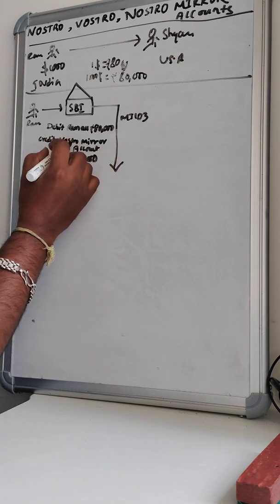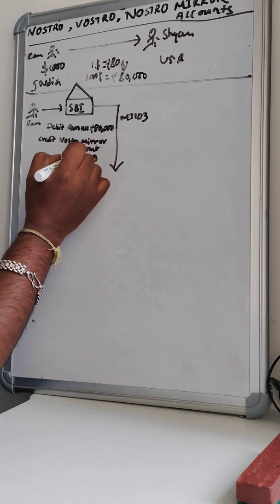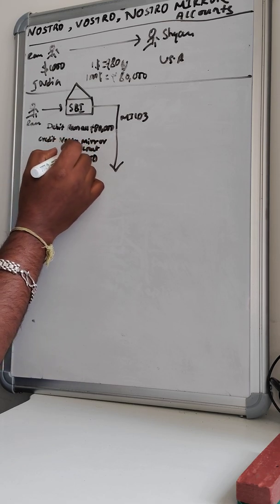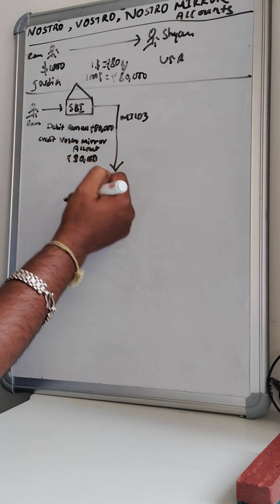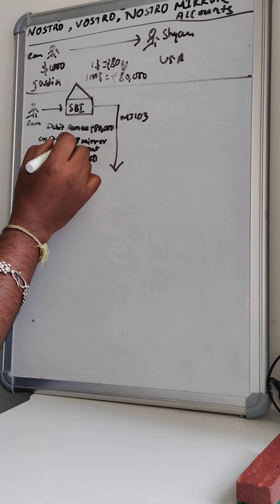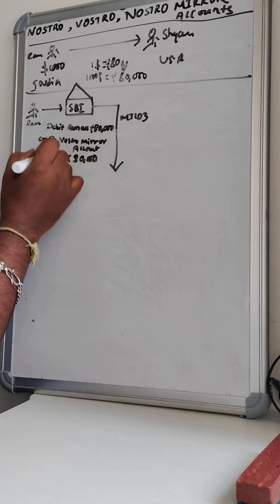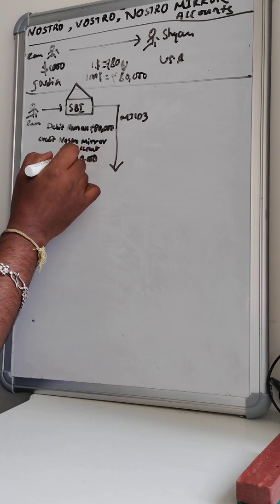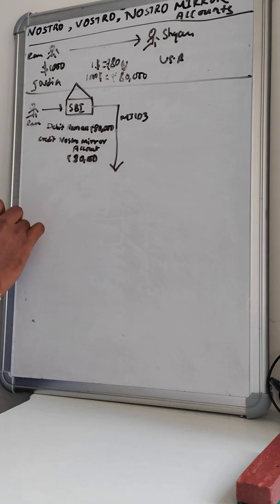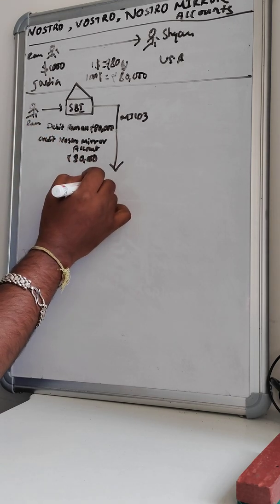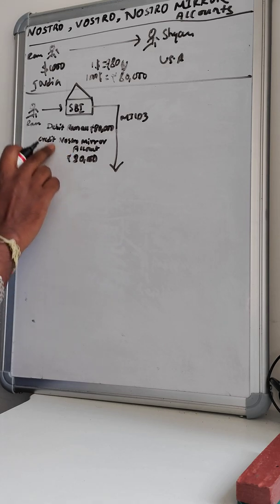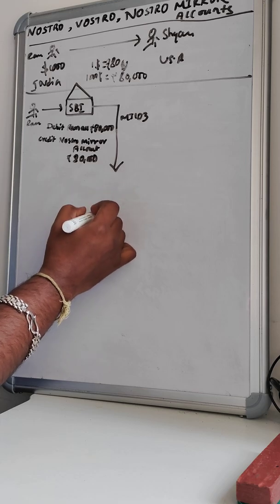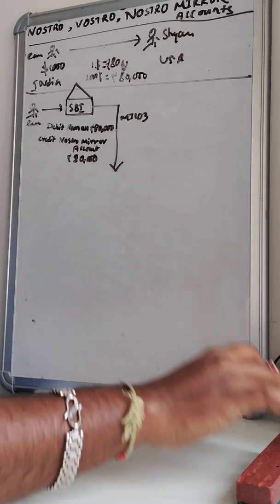In this situation we can see the Nostro Mirror account comes into the picture. It has nothing to do with any payments — it will not transfer any funds to the receiver bank. It is just to maintain records for the reconciliation purpose of SBI Bank, so at the end of the day they can get a report showing how many transactions happened on this particular Nostro Mirror account.